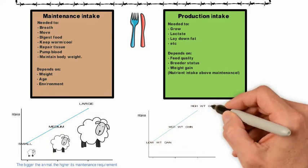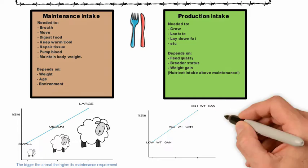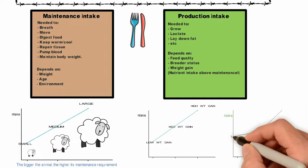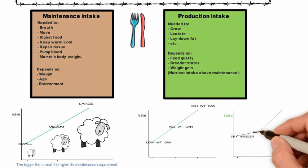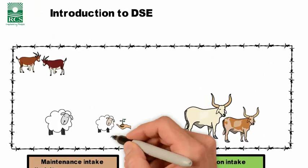An animal with higher weight gains is going to have higher intake because it's better quality feed providing that higher weight gain. A dry breeder animal versus a pregnant versus a lactating animal, they're going to have different intakes with lactating animals eating a lot more. So the higher the level of production, the higher the intake.